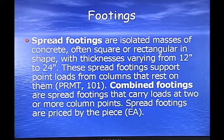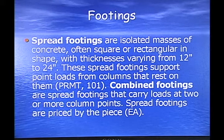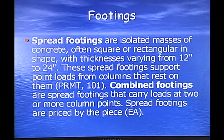Spread footings are isolated masses of concrete, often square or rectangular in shape, with thickness varying from 12 inches to 24 inches. These spread footings support point loads from columns that rest on them. Combined footings are spread footings that carry loads at two or more column points. Spread footings are priced by the piece, or each.